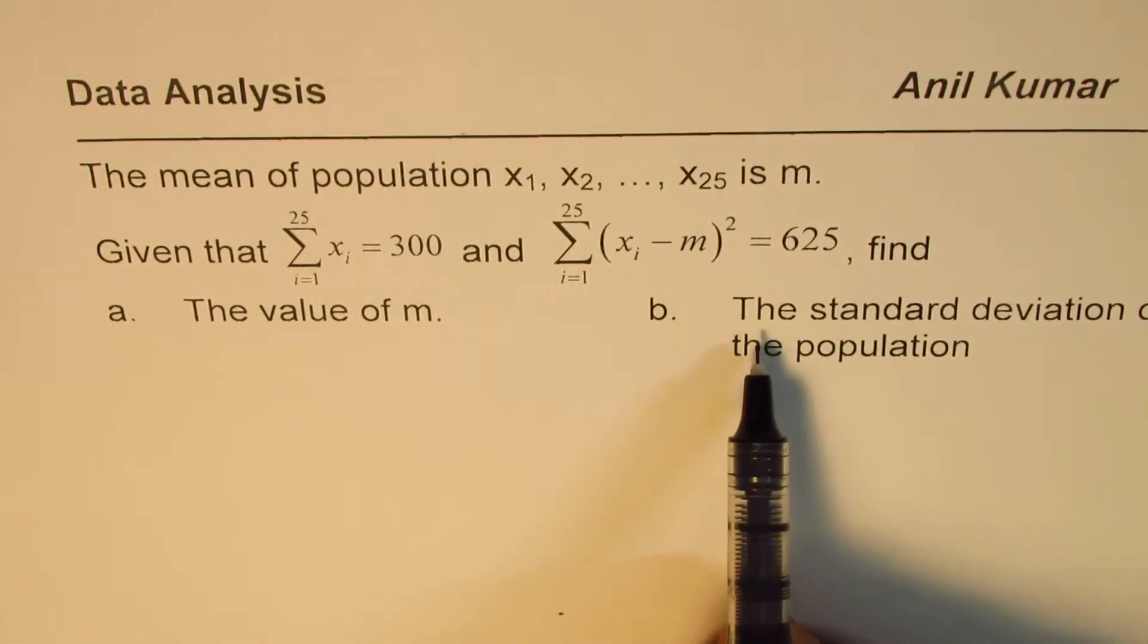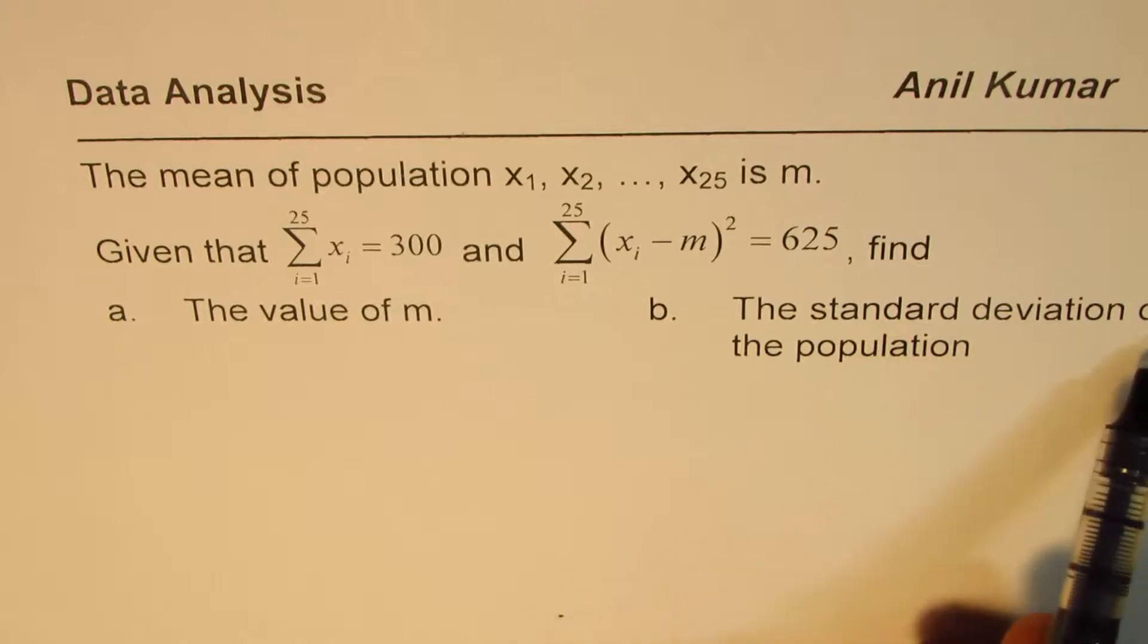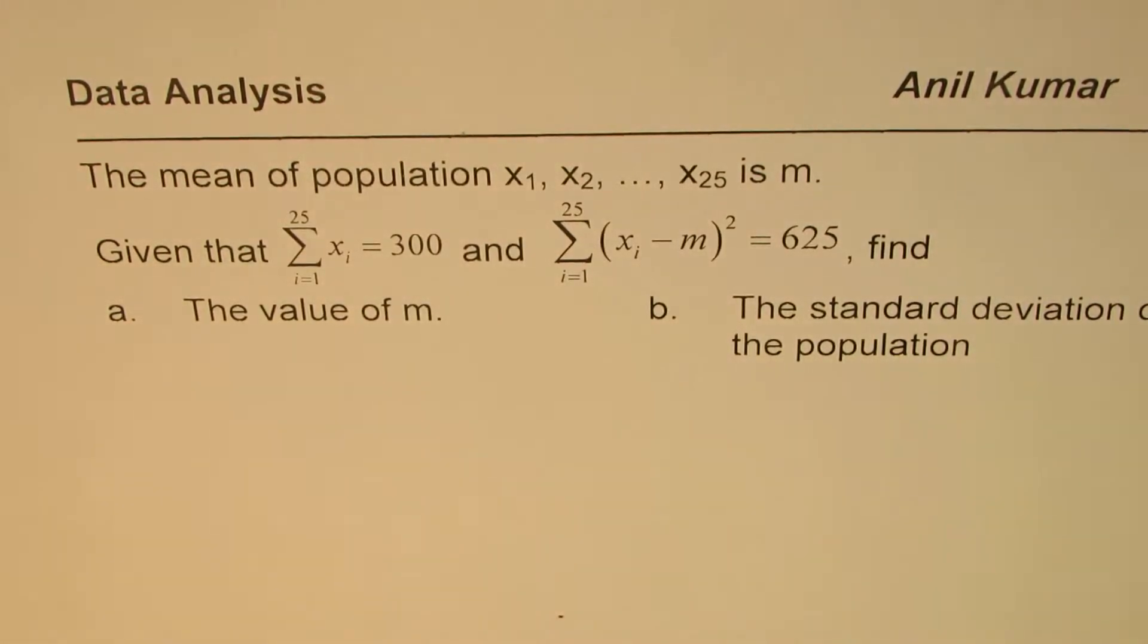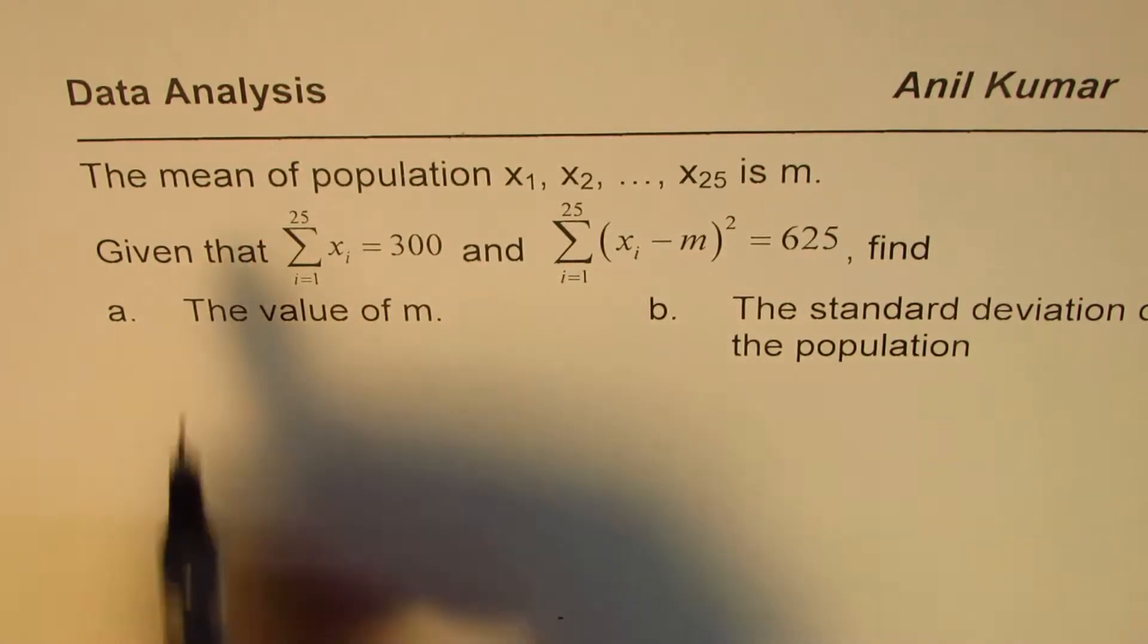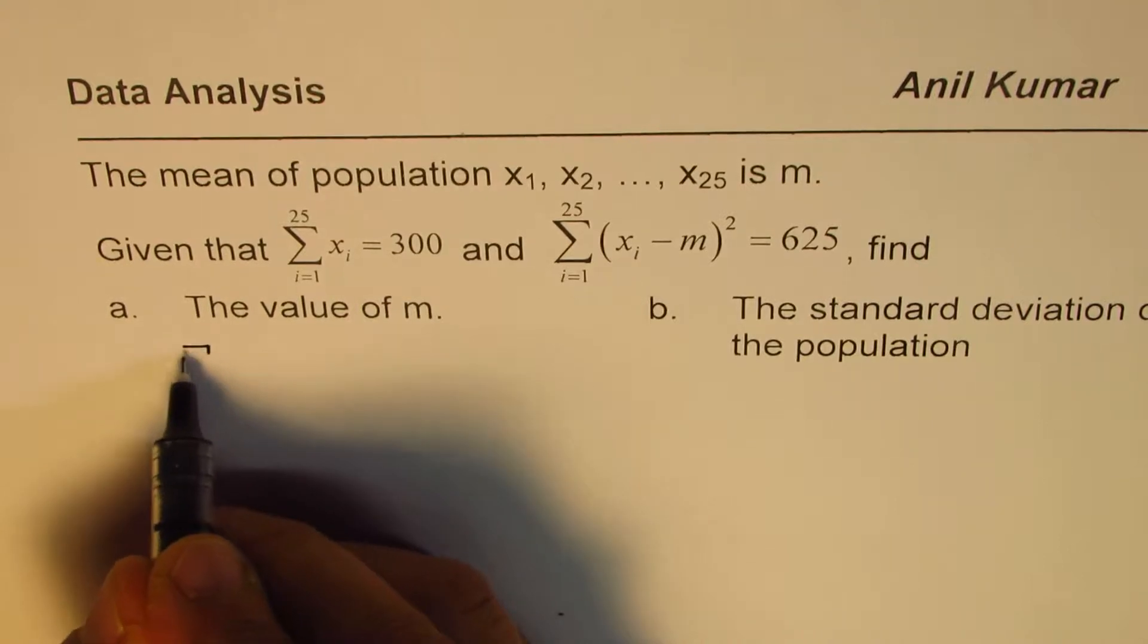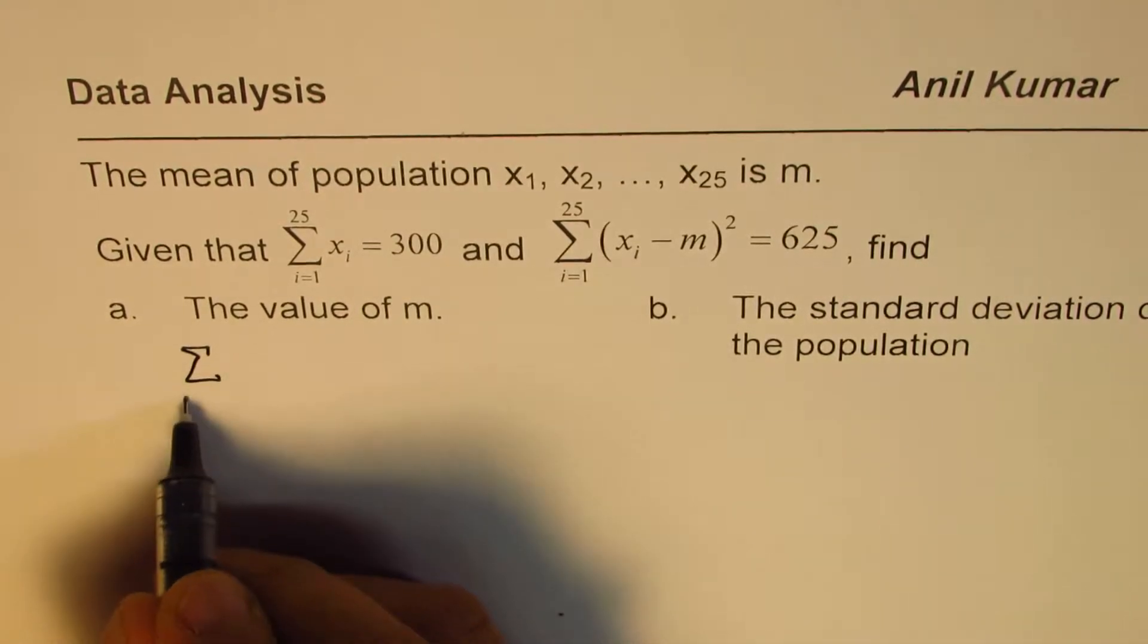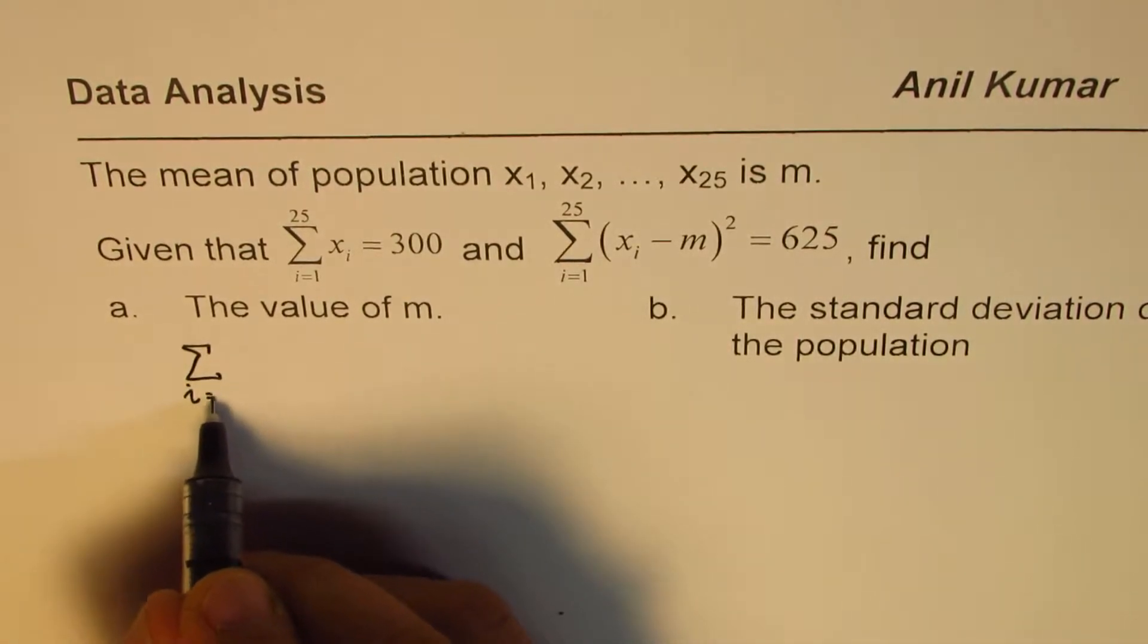Find the value of mean m and find the standard deviation of the population. That's the question for you. You can pause the video, answer the question, and then look into my suggestions. What are we given? We are given that the sum for i equals 1 to 25 for these 25 elements is 300.